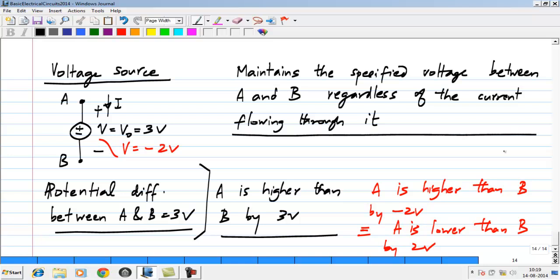And this voltage could also be dependent on time, though in most of this course we will be looking at voltages which are constant with time. It could very well be a voltage source which has a time dependent voltage, that is very much possible. All it means is that the voltage difference between A and B is that function of time.